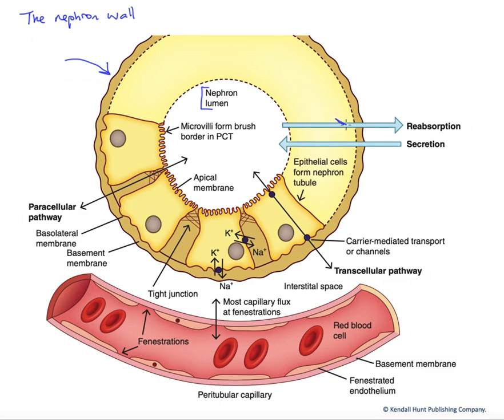Reabsorption is the removal of a filtered substance, returning it to the bloodstream, the peritubular capillaries down here, whereas secretion is the addition of a substance not filtered to that nephron lumen, enhancing its excretion. The source of those secreted substances is also this peritubular capillary blood.